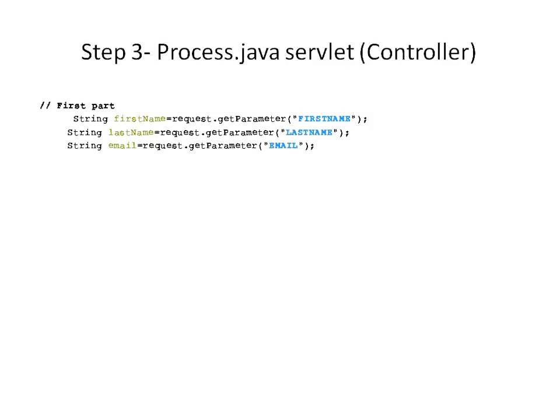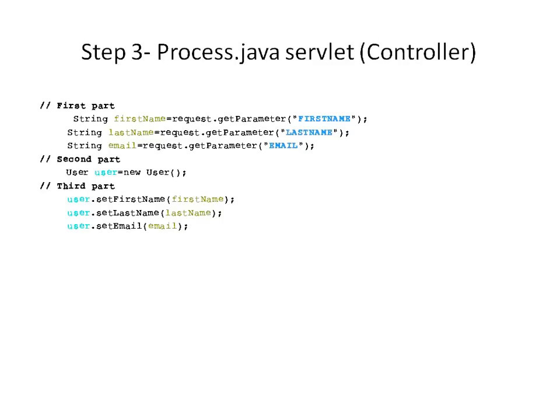These Java strings are temporary strings. In the second part, we are going to instantiate our User object using the default constructor. In the third part, we are going to call setter methods on the User object and assign the extracted values stored in the temporary Java strings as arguments. In the fourth part, we call request.setAttribute, which takes two arguments: a string 'user' and the user object. This method sets our user object into requestScope so that we can retrieve it in another resource using request.getAttribute.